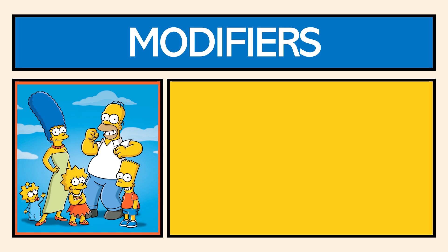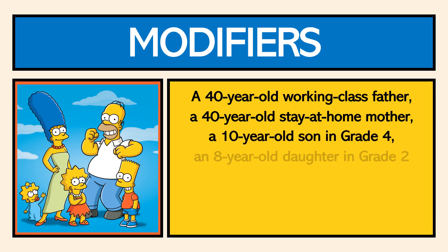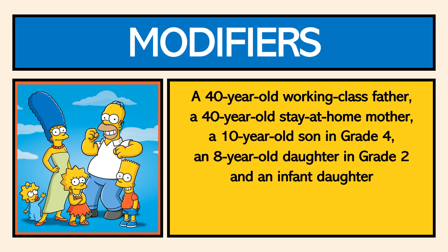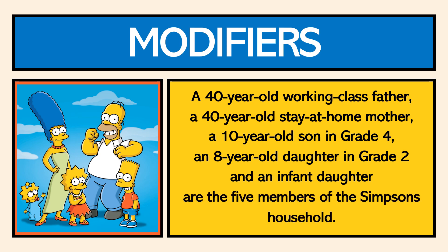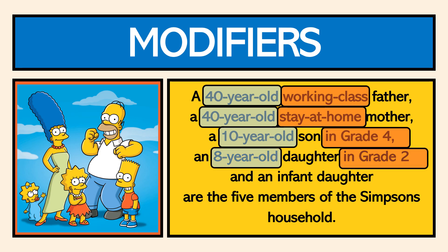For example: 'A 40-year-old working-class father, a 40-year-old stay-at-home mother, a 10-year-old son in grade four, an eight-year-old daughter in grade two, and an infant are the five members of the Simpsons household.' In this context, you see age and working status describing the father and mother, age and academic status describing the son and daughter, and infant referring to the youngest. Only at the very end do we get our action — 'are the five members of the Simpsons household.'